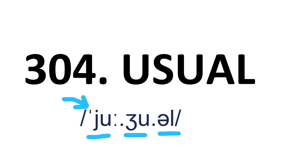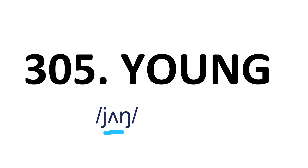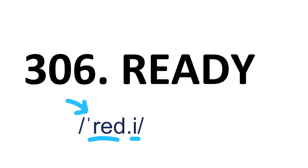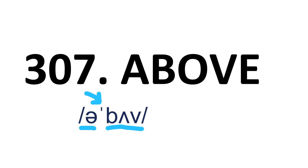Usual — it's a three-syllable word and the stress is on the first syllable. It has only one syllable. Ready — it's a two-syllable word and stress is on the first syllable. Ready. Above — it's a two-syllable word and stress is on the second syllable. Above.